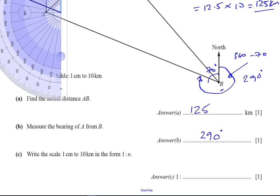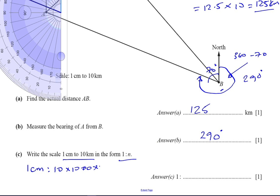Part C says: write down the scale — one centimeter to 10 kilometers — in the form one to N. That means a ratio without any units. You have to write them to the same unit. Convert 10 kilometers into centimeters: 10 kilometers times 1000 gives 10,000 meters, then multiply by another 100 to get centimeters — giving one, two, three, four, five, six zeros: one million. So one to one million is the scale of this drawing in the form one to N.